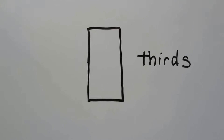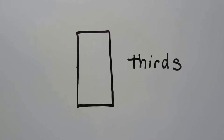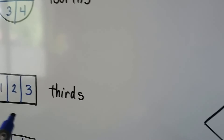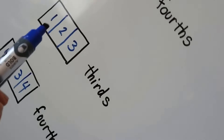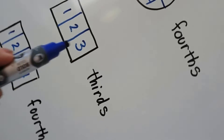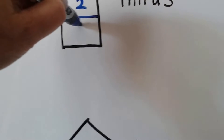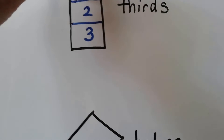Now the rectangle is standing up. How can we make thirds — three equal parts? When we did it before, we drew lines horizontally. Couldn't we draw the lines coming across like that? So for thirds, we could come across this way and have one, two, three equal parts.